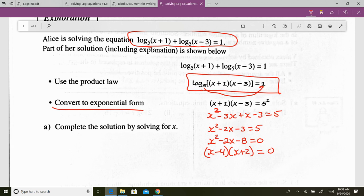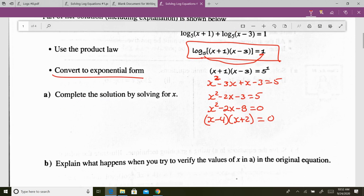How do I solve this now? What is x equal? Just look at each bracket. What makes the first bracket 0? 4. What makes the second bracket 0? negative 2. So x is 4 and negative 2.